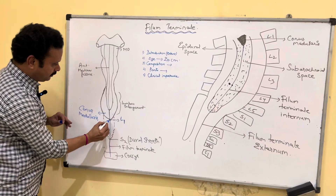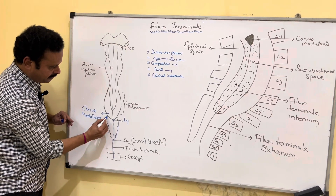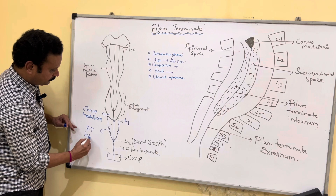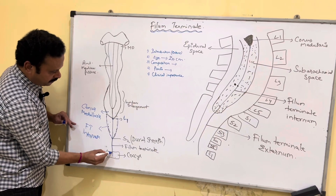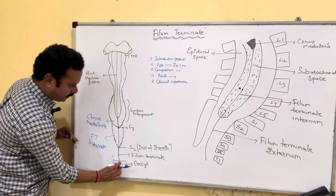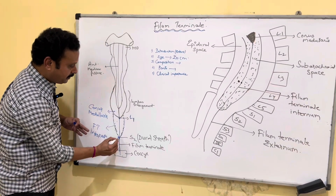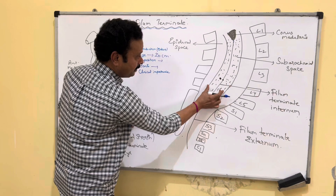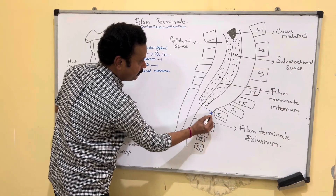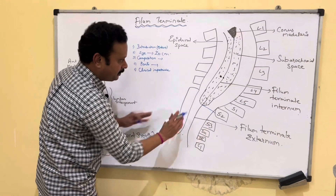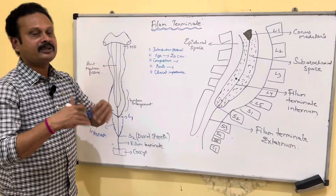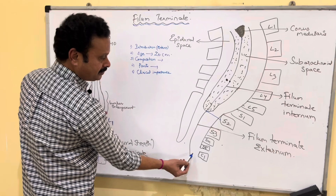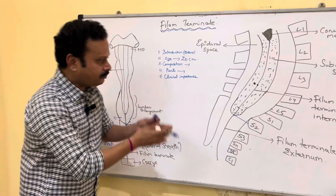The filum terminale internum ends at the level of S2. The remaining portion, which is not covered by the dural sheath, is called the filum terminale externum. It extends from S2 to the coccyx and is not limited by any dural sheath.